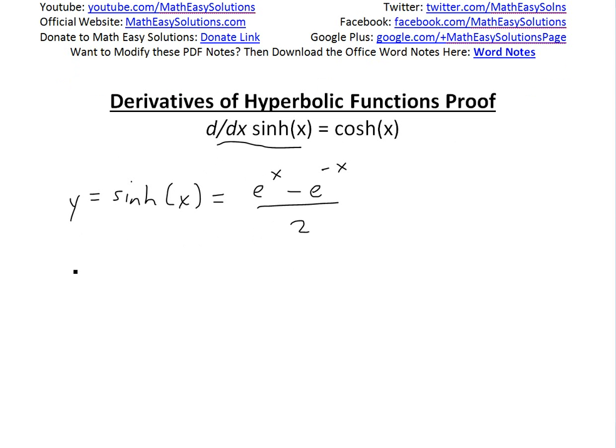So the derivative, y prime, this would just equal to the derivative of this side right here. That's just gonna be 1 over 2 times the derivative of e to the x, which is just e to the x.